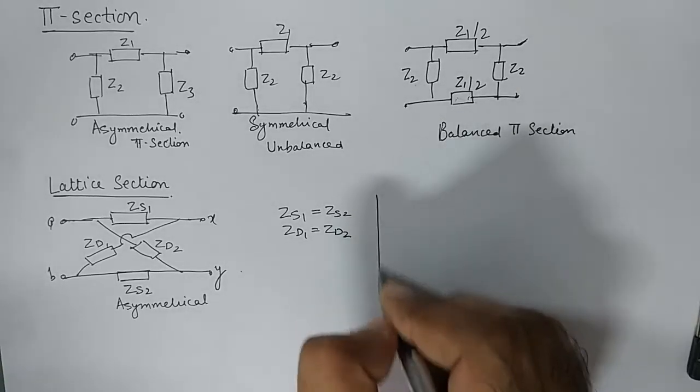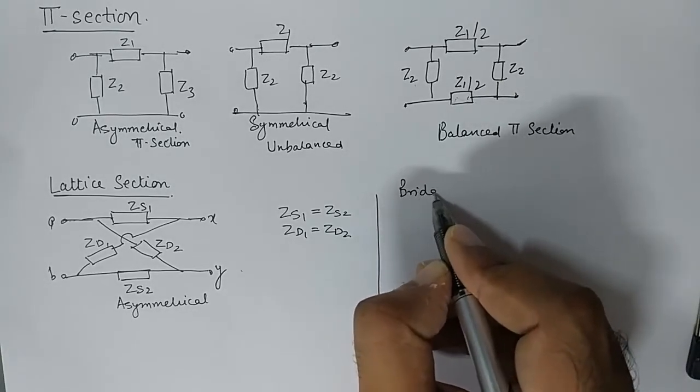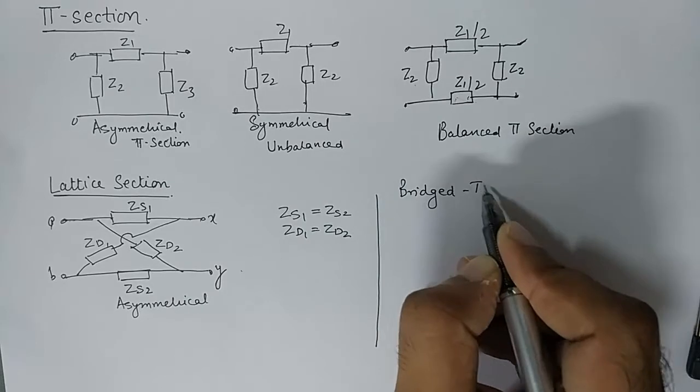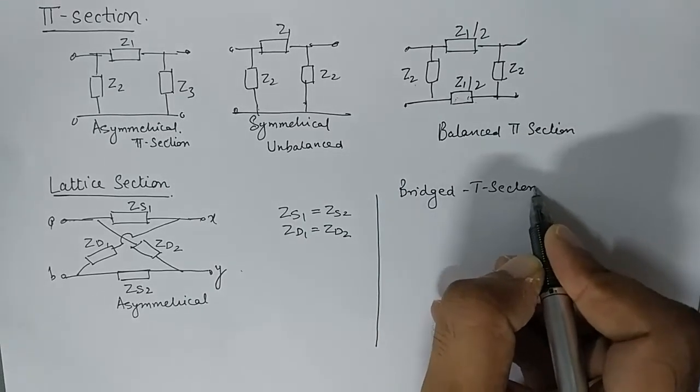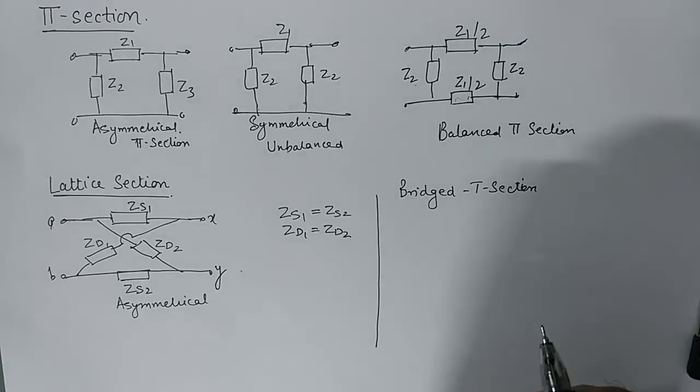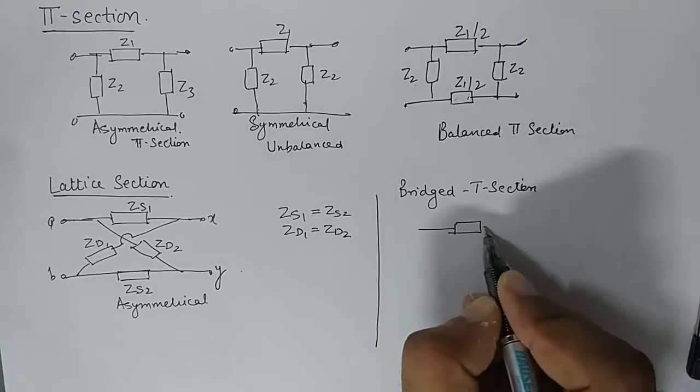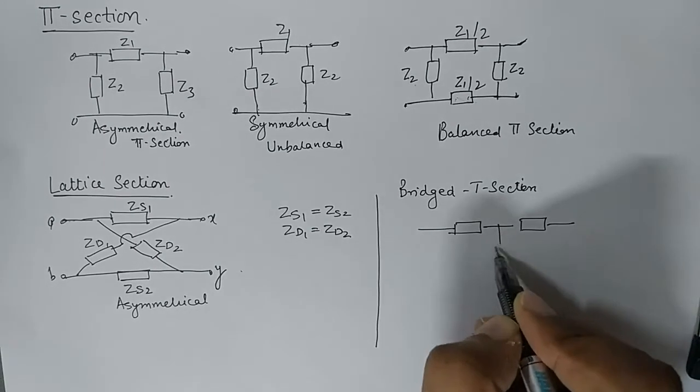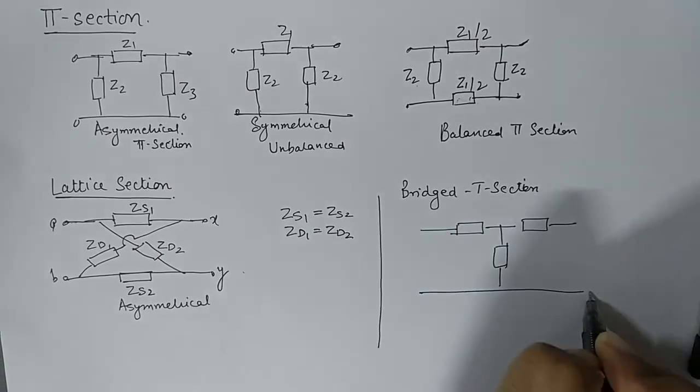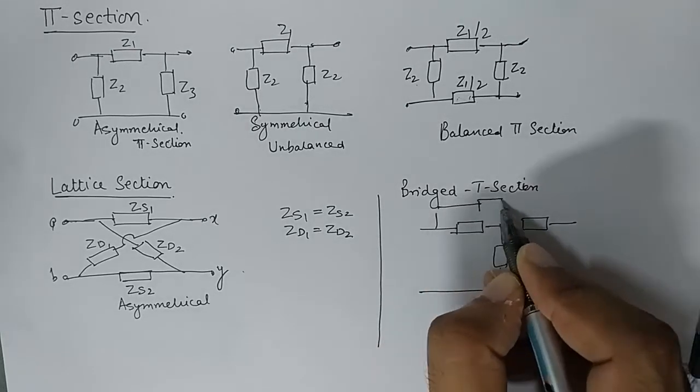Then we have another configuration which is known as bridged T-section, and it is something like this. We need to make a T-section first and then we make a bridge on top of it.